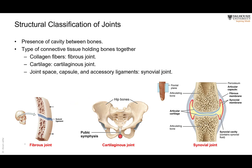The second type has fibrocartilage between the articulating bones, and this is called a cartilaginous joint. There is cartilage — not always fibrocartilage, but cartilage — so it is called a cartilaginous joint. Most of these joints are slightly mobile, with only a slight degree of mobility. For example, the joints between the vertebrae in the vertebral column, through the intervertebral discs, have slight mobility.